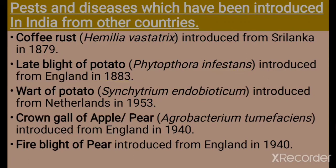Wart of potato, caused by Synchytrium endobioticum, was introduced from Netherlands in 1953. Crown gall of apple and pear, caused by Agrobacterium tumefaciens, was introduced from England in 1940. Fire blight of pear was also introduced from England in 1940.